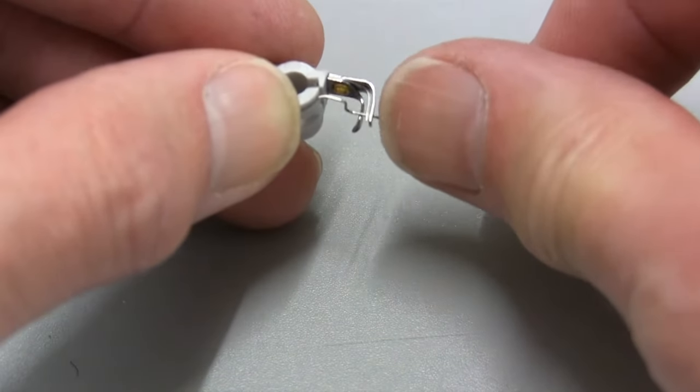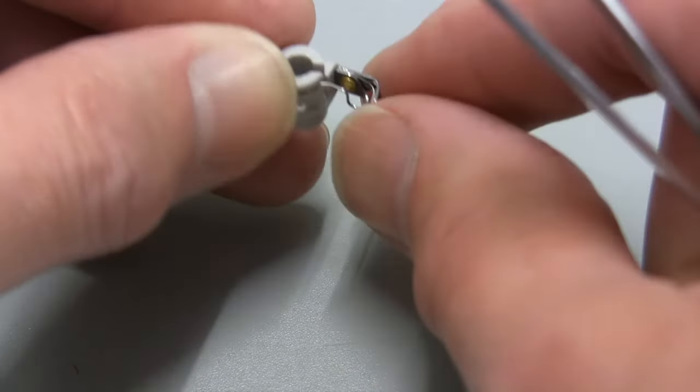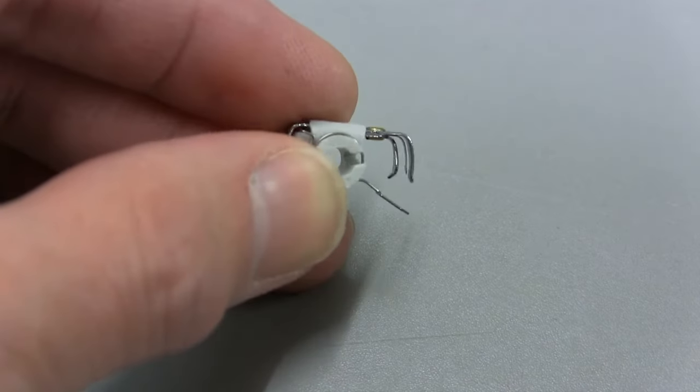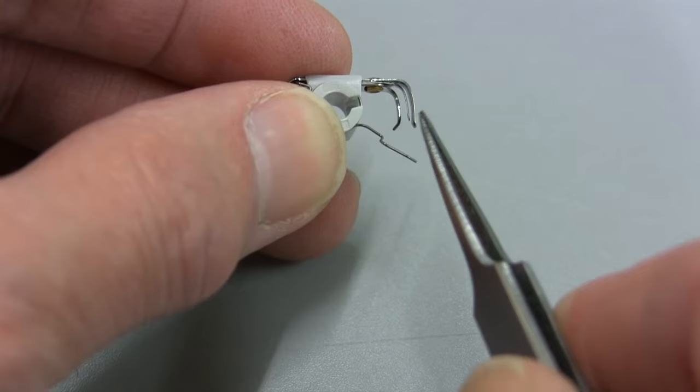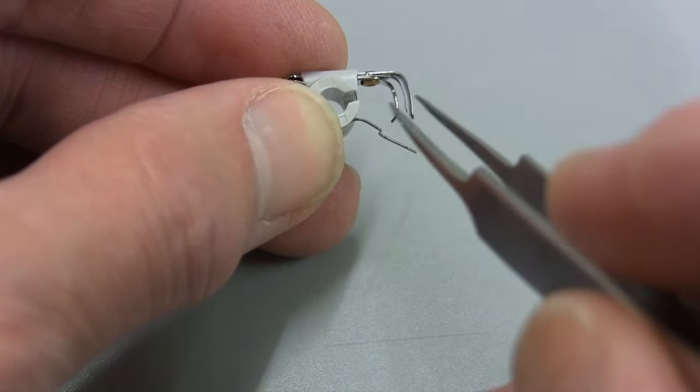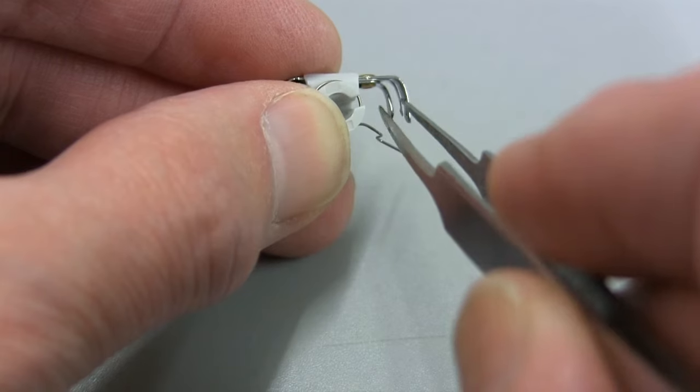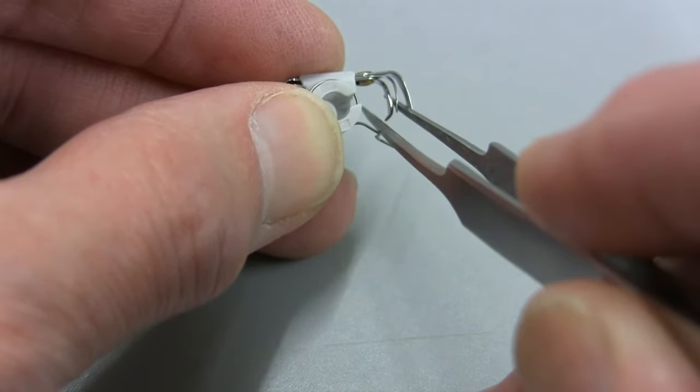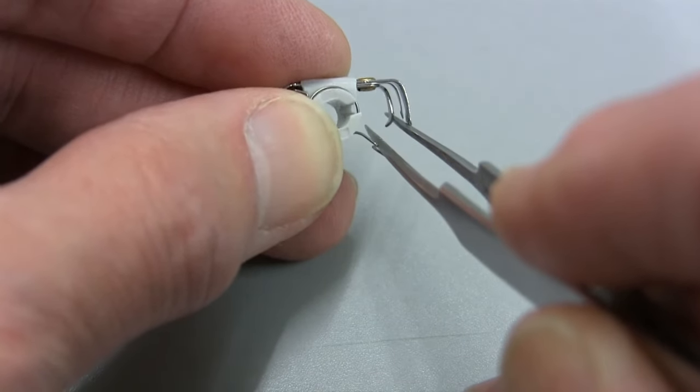Sometimes this can get flicked out and is no longer under the actual hook of the threader itself. When that's out you can see the threader even better now. It's that tiny sliver of metal just inside there, and sometimes that sliver of metal can get pushed to one side, in which case it's no longer going through the eye of the needle—it's going to the left of the eye of the needle.